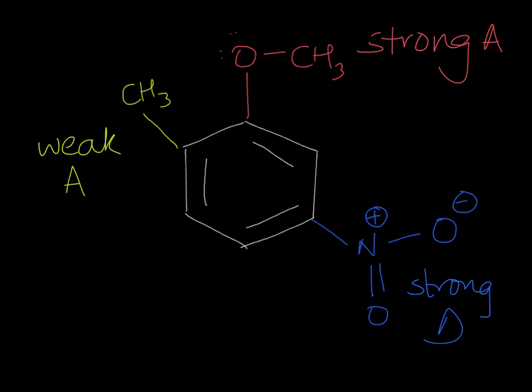So as you might have learned before, strong activators and weak activators are all ortho para directors. So both of these would be ortho para which means that they want the incoming group to be in the ortho or para position relative to them. So let's look at your strong activator. The ortho position is right here, the para position is right here and those are the only ones that are open.